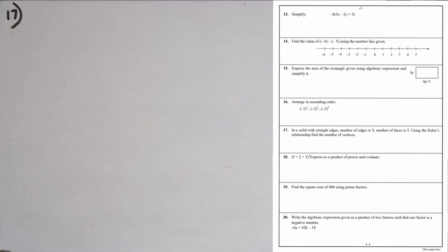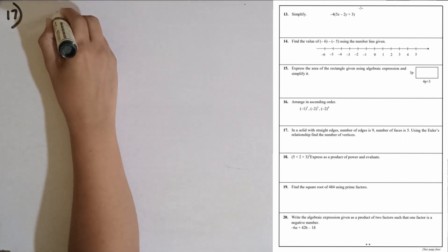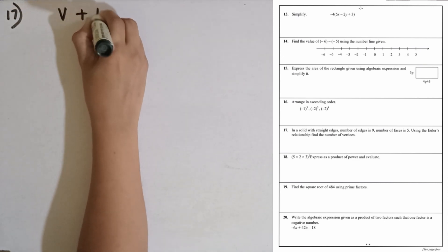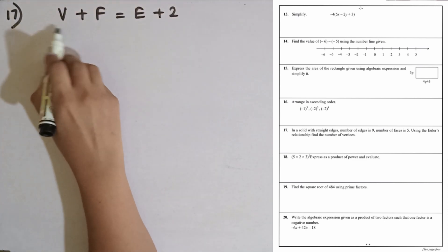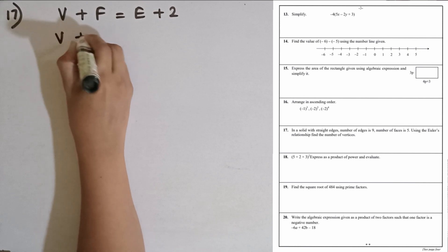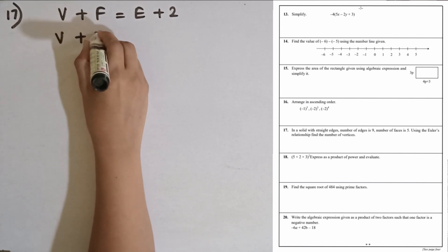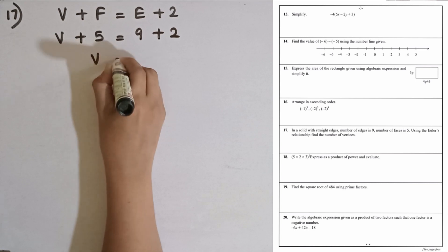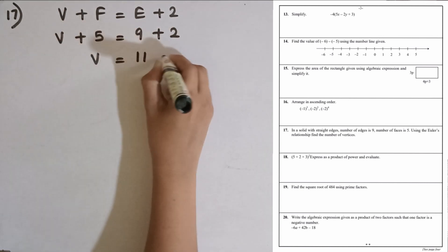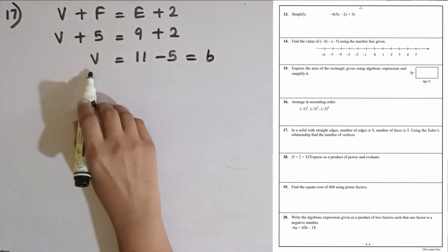Question number 17. In a solid with straight edges, the number of edges is 9, number of faces is 5. Using Euler's relationship — vertices plus faces equals edges plus 2 — find the number of vertices. V plus 5 equals 9 plus 2, so V plus 5 equals 11, therefore V equals 6. The number of vertices is 6.